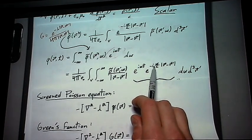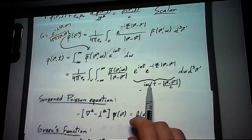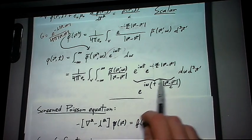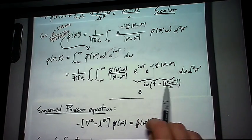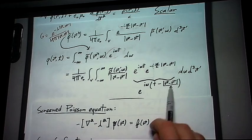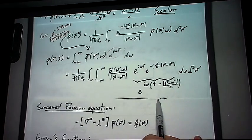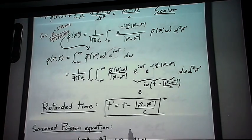We're going to factor out our i omega, and what you end up with is e to the i omega, and then you have this term t minus r minus r prime over c, which we will define to be the retarded time.